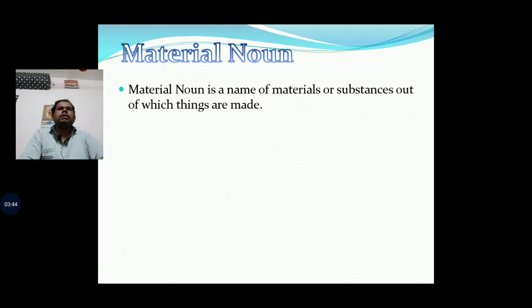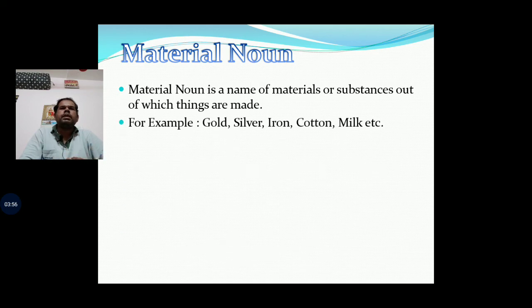Now, Material Noun. Material Noun is a name of materials or substances out of which things are made. That is, the names of substances from which other things can also be made. For example: gold, silver, iron, cotton, milk, etc. These are all things from which other things can be made.